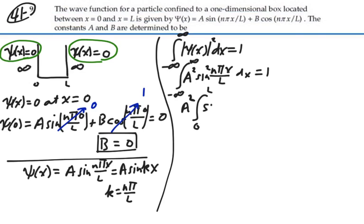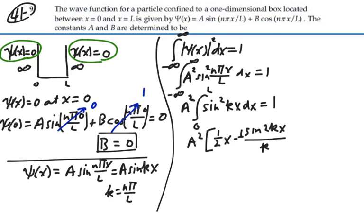And A² here, sin²(kx) dx is equal to 1. Well, if we look at the definite integral of sin²(kx) dx, there's actually, we can find that in a table. And so we have A², and then our table value for that integral is 1/2 x minus sin(2kx)/k, and with a 1/4 out front here. Evaluate it from 0 to L. And this should all equal 1.